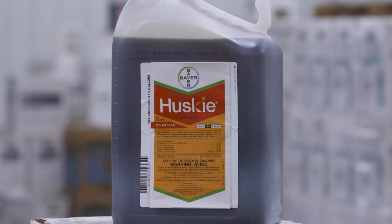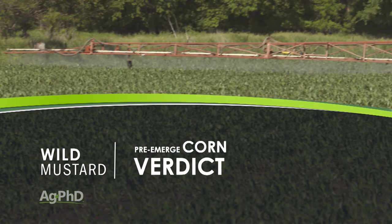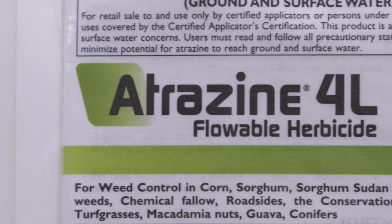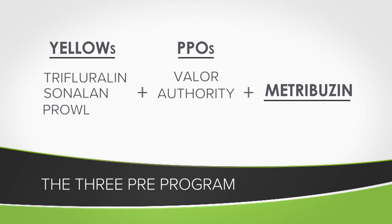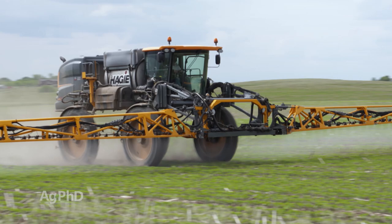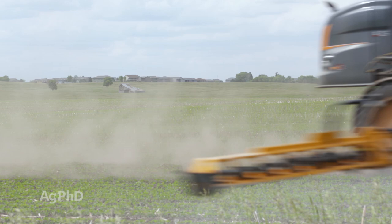When we get to corn, wild mustard isn't a real big problem, but our first choice pre-emerge would probably be Verdict. Post-emerge, I really like Status, but any of the HPPDs — especially when you put them along with just a little bit of atrazine — are going to do a good job as well. In soybeans, pre-emerge with metribuzin and one of the PPOs — either Valor or Authority — along with one of the yellows is an excellent program to start. Post-emerge, if you've got a herbicide-tolerant crop like Extend or Enlist, you've got the dicamba or 2,4-D options. Roundup will work, Liberty will work, and in conventional soybeans, something like a Pursuit-Flexstar combination does pretty well.